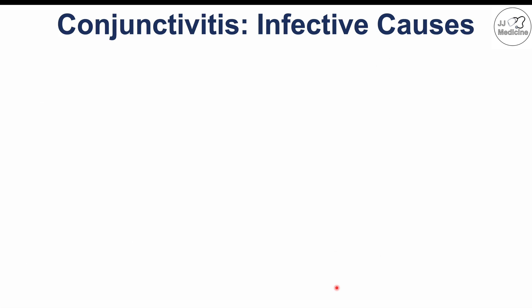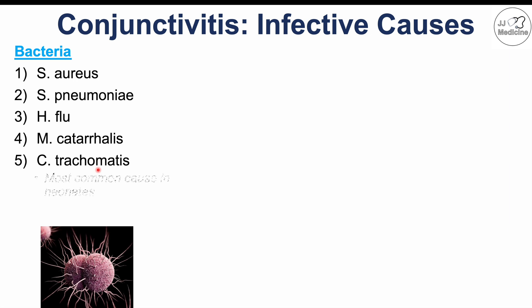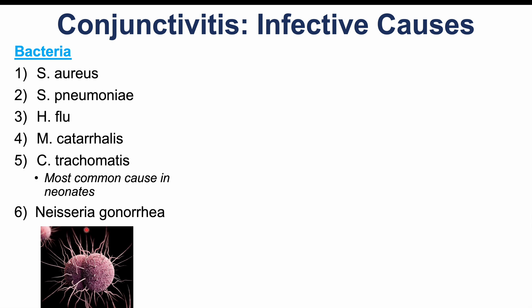Infective organisms that can cause conjunctivitis include bacteria such as Staphylococcus aureus, Streptococcus pneumoniae, Haemophilus influenzae (H. flu), and Moraxella catarrhalis — these are also important causes of upper respiratory tract infections and middle ear infections. Chlamydia trachomatis is another important bacterial cause and is actually the most common cause in neonates. Neisseria gonorrhoeae is also an important bacterial cause, and both Chlamydia trachomatis and Neisseria gonorrhoeae are sexually transmitted infections.